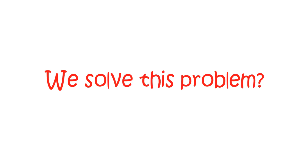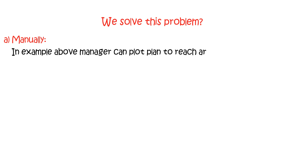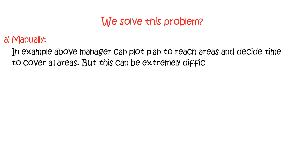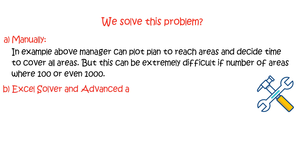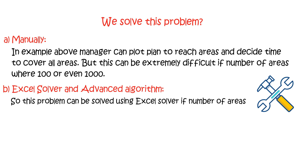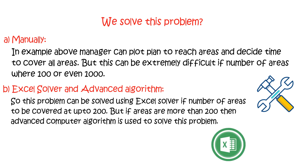How can we solve this problem? First, manually — the manager can plot a plan to reach the areas and decide the time to cover all areas. But this can be extremely difficult if the number of areas were 100 or even 1000. Secondly, using Excel solver or an advanced algorithm. This problem can be solved using Excel solver if the number of areas to be covered is up to 200. If areas are more than 200, then an advanced computer algorithm is used.